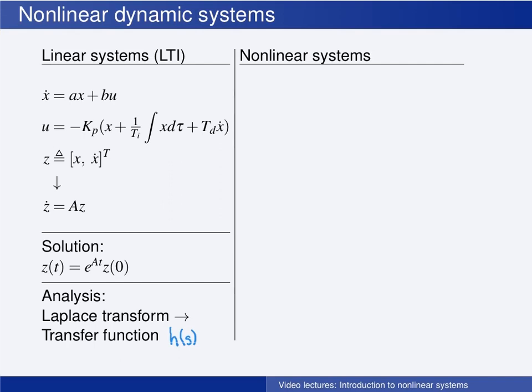Other times, the mathematical modeling results in nonlinear differential equations. The right-hand side of the differential equation is then no longer in this particular form here, but may be given by any function f, and we use the subscript p for process, which is a function of the state x, the input u, and possibly also the time t. The control law does not necessarily need to be a PID control law, but can be any function of the state, making it a state feedback law, and possibly also a function of the time.